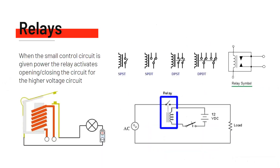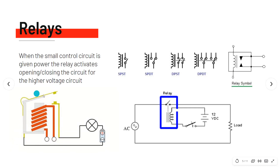Relays have a smaller control circuit that, when given power, activates the relay — opening or closing the circuit for the higher voltage circuit. You have coils where you connect your smaller circuit. When you supply voltage to trigger the relay to close — say this is a 12 volt relay — you supply 12 volts to close the circuit for the higher voltage. It creates a magnetic field on the set of coils and closes the electromagnetic switch. These two circuits are not connected to each other.